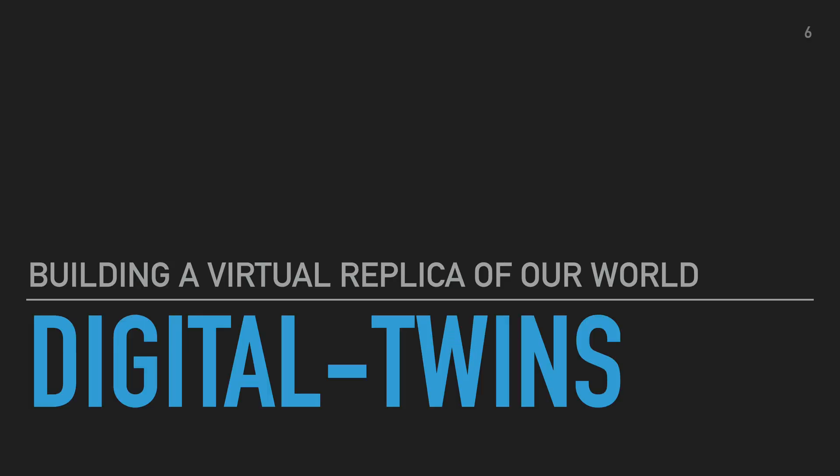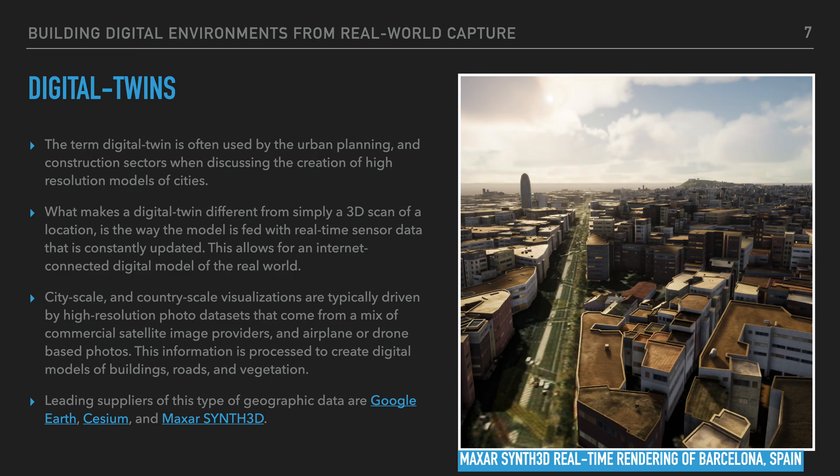Digital Twins: Building a virtual replica of our world. The term digital twin is often used by the urban planning and construction sectors when discussing the creation of high-resolution models of cities. What makes a digital twin different from simply a 3D scan of a location is the way the model is fed with real-time sensor data that is constantly updated, allowing for an internet-connected digital model of the real world. City-scale and country-scale visualizations are typically driven by high-resolution photo data sets from a mix of commercial satellite image providers and airplane or drone-based photos.